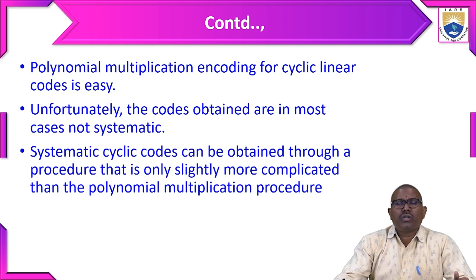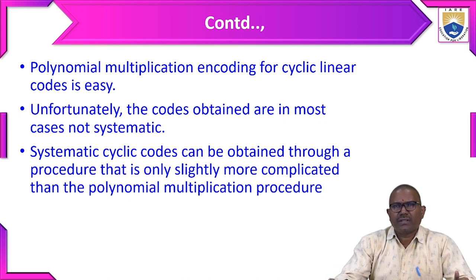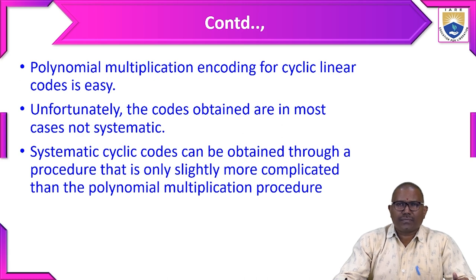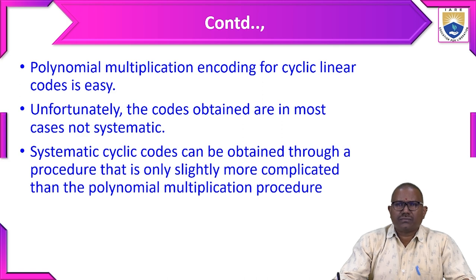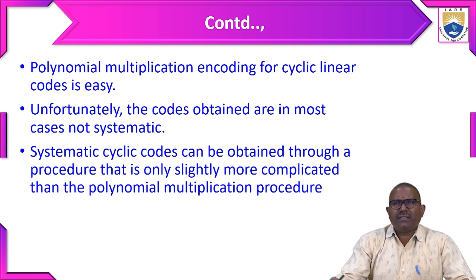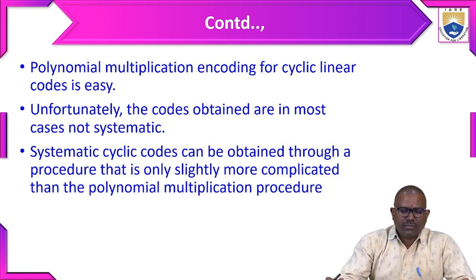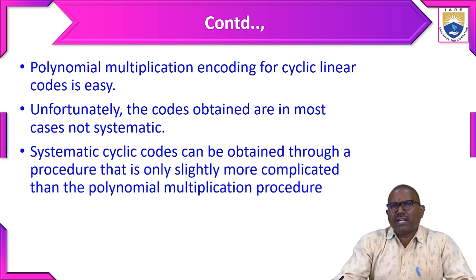Those parity bits are useful for error detection and error correction. In channel encoding we are going to add these parity bits. The place of the message bits changes depending on whether the code is systematic or non-systematic. Systematic cyclic codes can be obtained through a procedure that is only slightly more complicated than the polynomial multiplication procedure.